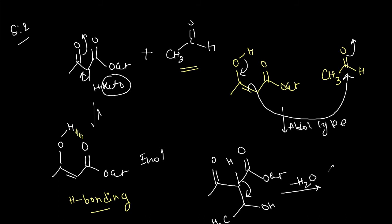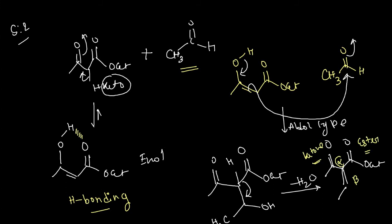After elimination of water, we obtain an alpha,beta-unsaturated ester or alpha,beta-unsaturated ketone — because we have a ketone here and an ester here. This position is alpha and this is the beta position with respect to the carbonyl, giving an unsaturated alpha,beta system.